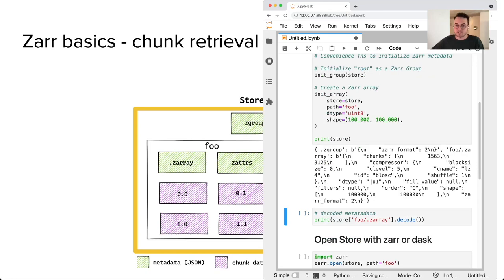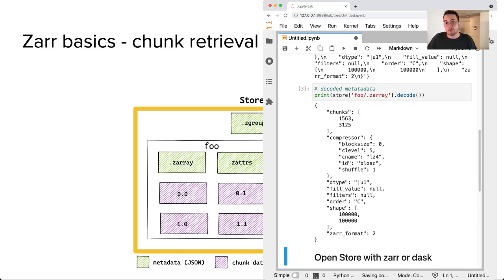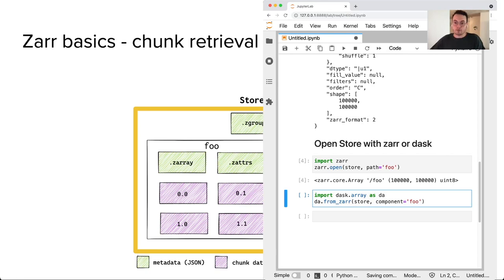You can see that our dictionary has now been updated with these new key value pairs, which then we can access by calling the store getItem method. Here I'm printing out the array metadata that has been written to our store for the foo array. We can now pass the store object directly to Zarr, and then provide the given path to our array, and Zarr and Dask will both recognize the array that we've written in our store.